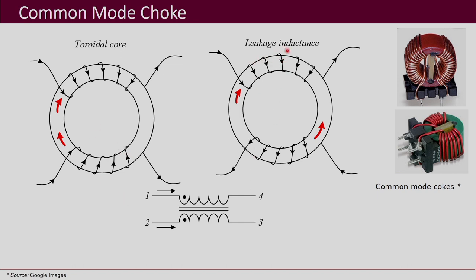For the differential current, differential currents are going to be opposite. If over here this is the forward direction of current, the flux produced by it is in the clockwise direction, and the other winding produces flux in the anti-clockwise direction. These two fluxes are opposite to each other — they tend to cancel each other out. Therefore, differential mode currents passed through common mode chokes would not see any inductance — effectively, ideally zero inductance.